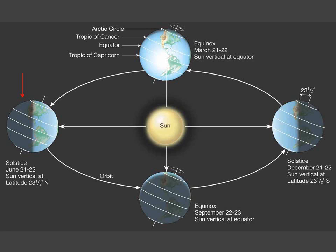By the time we get to late June, the North Pole is now tilted toward the sun, and the Northern Hemisphere receives more direct sunlight than the Southern Hemisphere, and the days are also longer. As a result, the Northern Hemisphere becomes warmer than the Southern Hemisphere. This marks the summer season in the Northern Hemisphere and the winter season in the Southern Hemisphere.